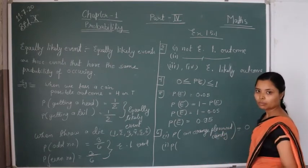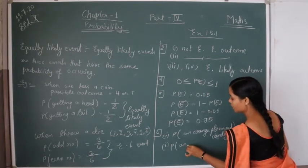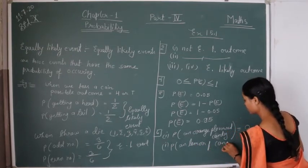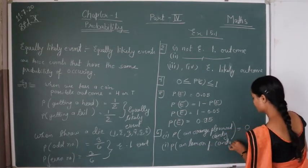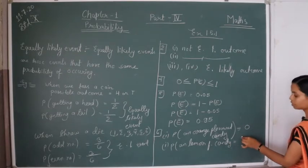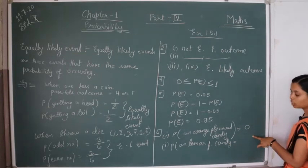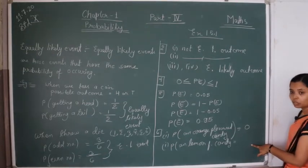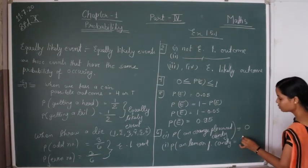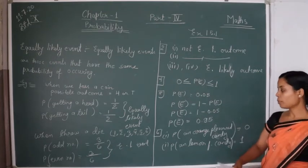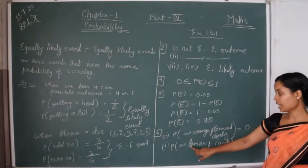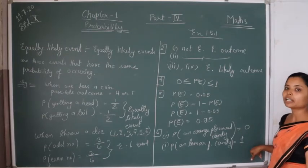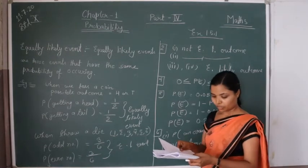The bag contains only lemon flavored candy. The favorable outcomes for lemon flavored candy and the possible outcomes are also lemon flavored candy. So we can say that the probability of getting a lemon flavored candy is 1. This is called the sure event or certain event.